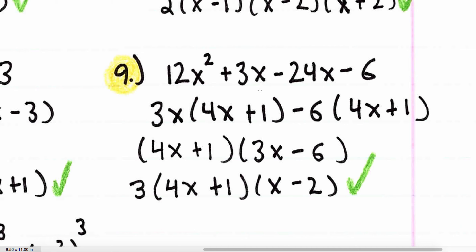Number nine: 12x squared plus 3x minus 24x minus six. The GCF of the first two terms is 3x, so I factor out 3x, giving 3x times 4x plus one. The GCF of the last two terms is negative six, so I factor out negative six — remember, when you factor a number out completely, there should still be a one left over — giving negative six times 4x plus one. Now 4x plus one is the common factor, so I factor it to the front: 4x plus one times 3x minus six. Since 3x minus six has a GCF of three, I pull that out to the front, leaving three times 4x plus one times x minus two.